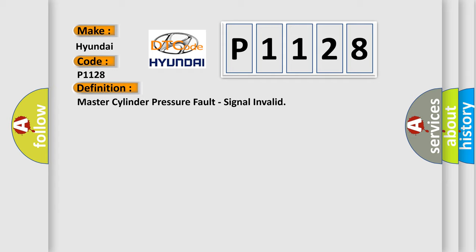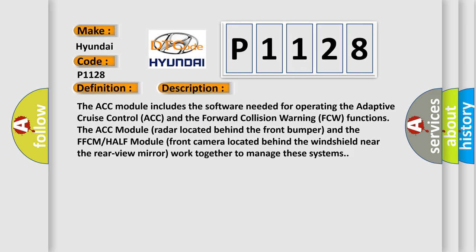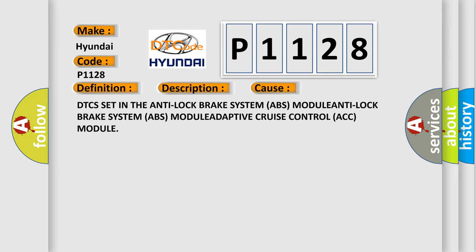And now this is a short description of this DTC code. The ACC module includes the software needed for operating the adaptive cruise control ACC and the forward collision warning FCW functions. The ACC module radar located behind the front bumper and the FFCMHALF module front camera located behind the windshield near the rearview mirror work together to manage these systems. This diagnostic error occurs most often in these cases: DTCs set in the anti-lock brake system ABS module, anti-lock brake system ABS module, adaptive cruise control ACC module.